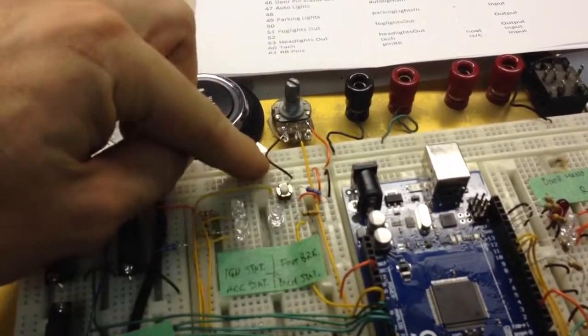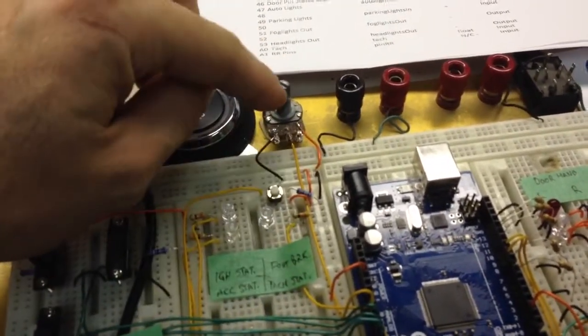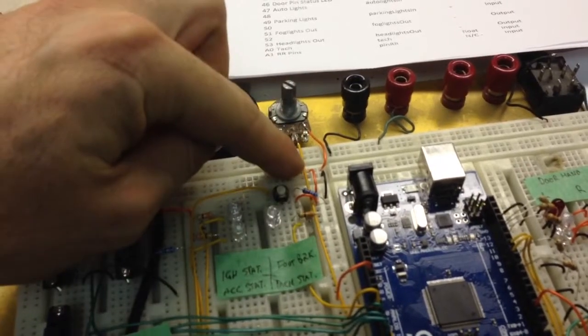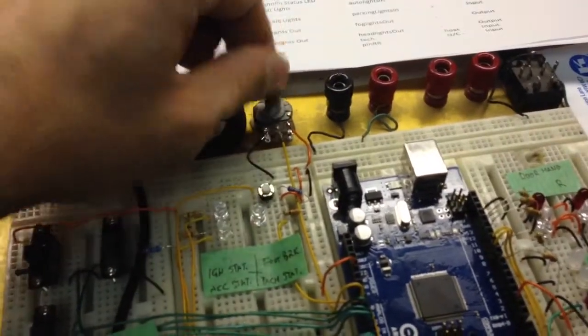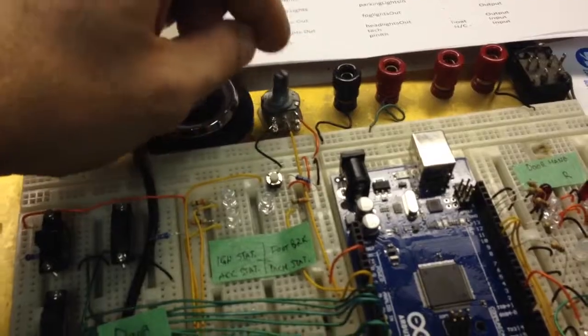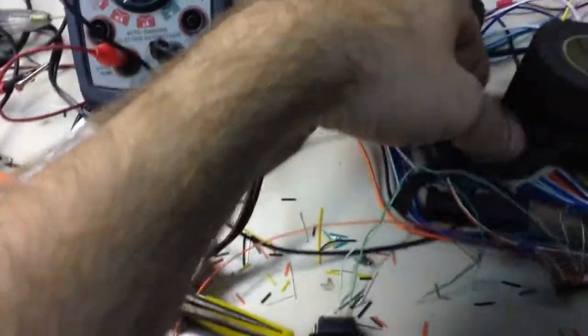So we got ground and we have power, and then it's going to put out a voltage on the center and determine by what position this is in, which is actually going to take place of this little guy that we made up here.